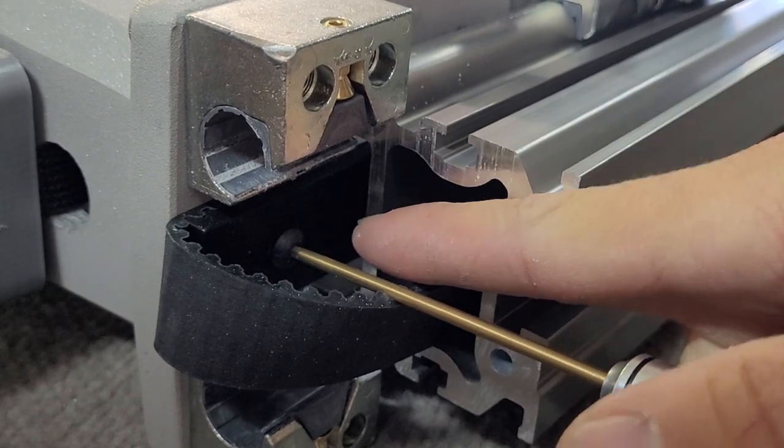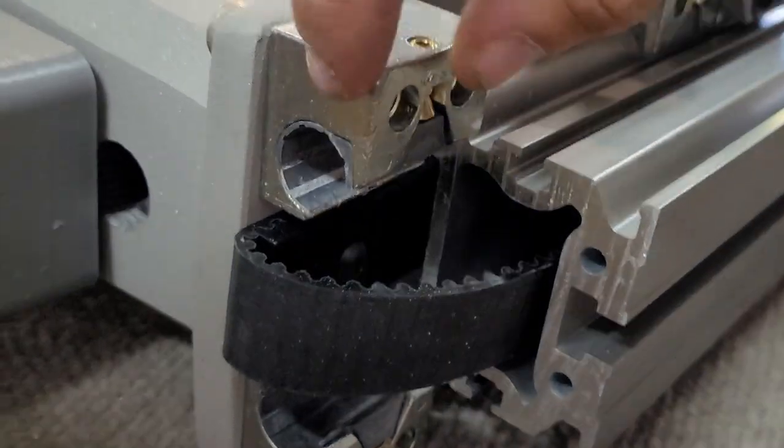With the belt now secure, we can slide the proximal arm the rest of the way onto the rail.